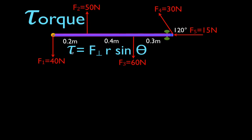This is the equation we're going to use. This is tau, the symbol for torque. To calculate the torque, we use this equation: it's the force times the lever arm times the sine of theta, theta being the angle between the radial vector and the force vector.